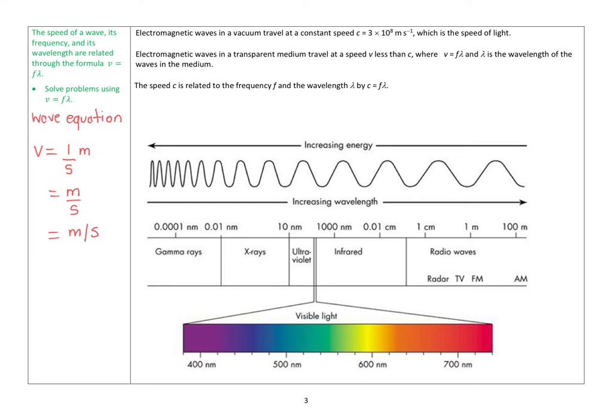For electromagnetic waves, at least when they are in a vacuum, they will travel at what we call the speed of light, C, which is 3 times 10 to the 8 metres per second, so 300 million metres per second. Electromagnetic waves in a transparent medium travel at a speed V, which is less than C, where V equals F lambda. We've talked about that already. We don't do a lot on that this year. Generally, we do with just C, and the speed of light in a vacuum.